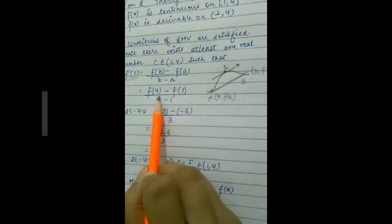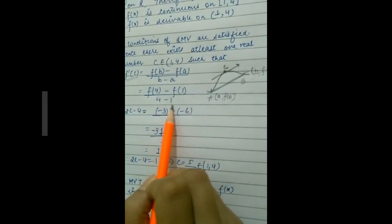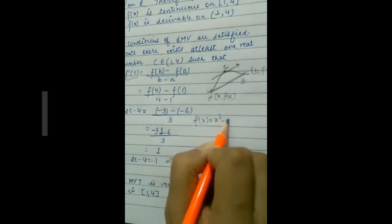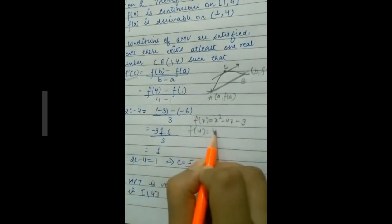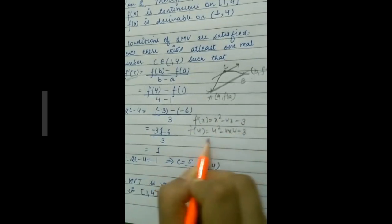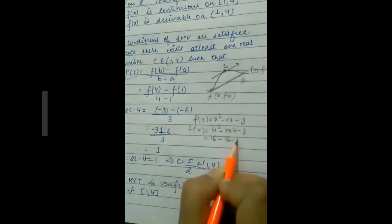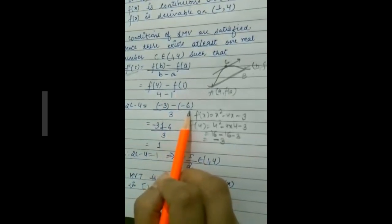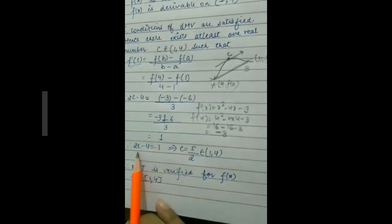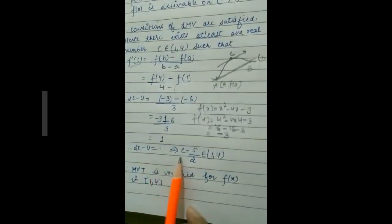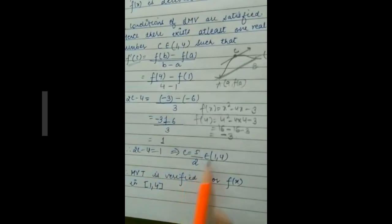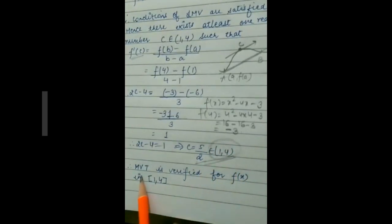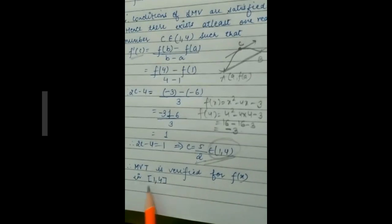Here b = 4, so we compute f(4) − f(1) / (4 − 1). f(4) = 4² − 4(4) − 3 = 16 − 16 − 3 = −3. Similarly f(1) = −6. Solving the full equation gives 2c − 4 = 1, which gives c = 5/2. Since 5/2 belongs to the interval (1, 4), the Mean Value Theorem is verified for f(x) on [1, 4].